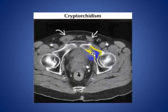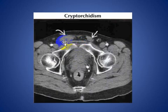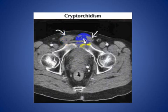Here we see this patient with a soft tissue mass lesion in the right inguinal ring, consistent with an undescended testis. This is the spermatic cord.